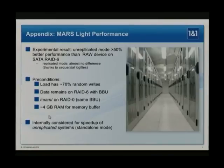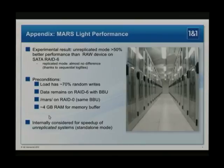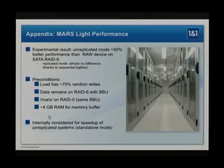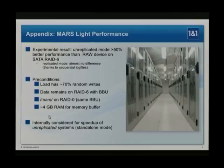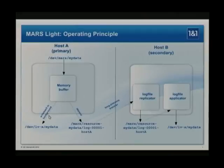Performance. Do you believe it's faster than a raw device? It can be faster. There are some key conditions: the load has to be very random and heavy, there have to be many writes, and you need separate spindles for the slash-MARS directory. The trick is that the log file has to reside on dedicated spindles. The memory buffer is also very important. And now why it's faster.